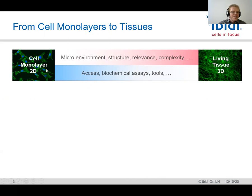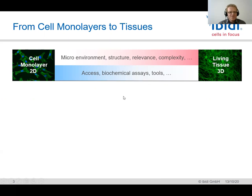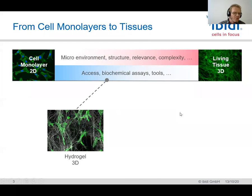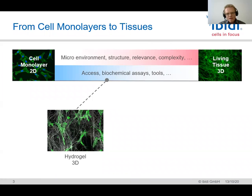At the same time, cell monolayer assays are very nice for accessibility — there are a lot of biochemical tools and biochemical assays available. One step towards 3D, and the first and easiest step, is working with a hydrogel in which the single cells are surrounded by a three-dimensional matrix. This is what I will show you right now.